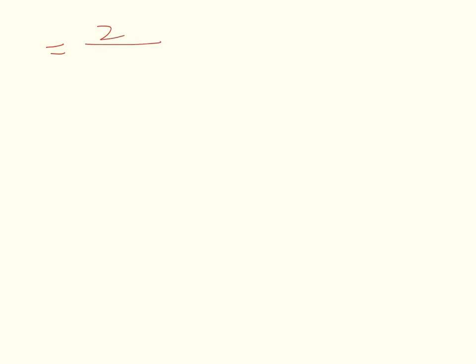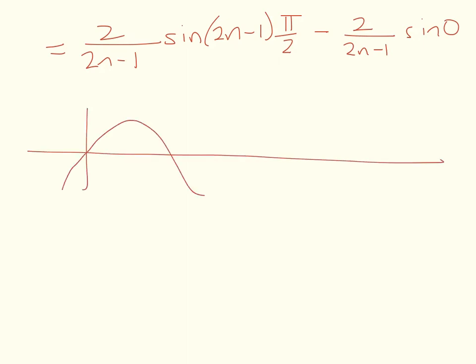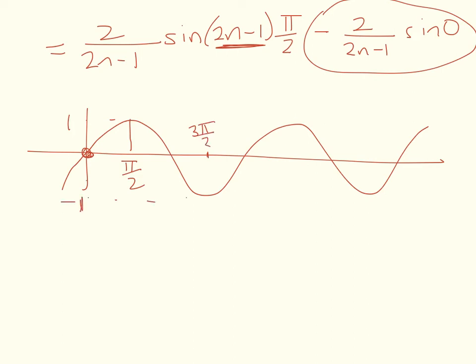So this equals 2 over (2n minus 1) times sine of (2n minus 1) pi on 2 minus 2 over (2n minus 1) sine of 0. So it's time to draw our sine curve and we can see what's going on pretty easily. So there's my sine curve. Sine of 0 of course is 0, so that's going to ditch that bit for me. And let's see what's happening in here with these pi on 2 functions. Sine of 1 pi on 2 of course is 1. Sine of 3 pi on 2 is negative 1.